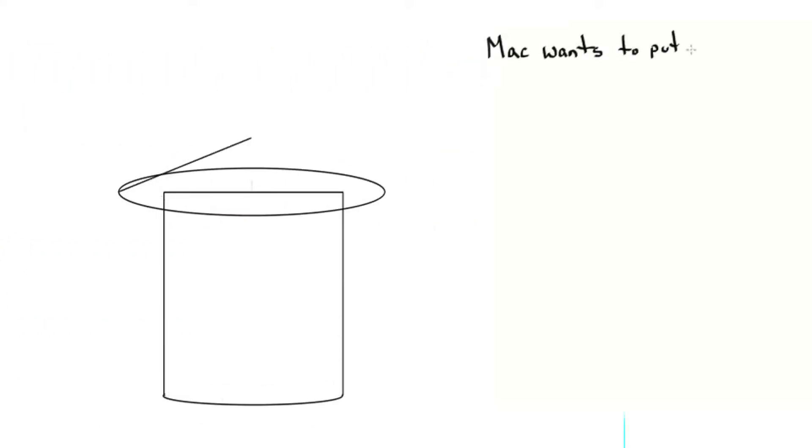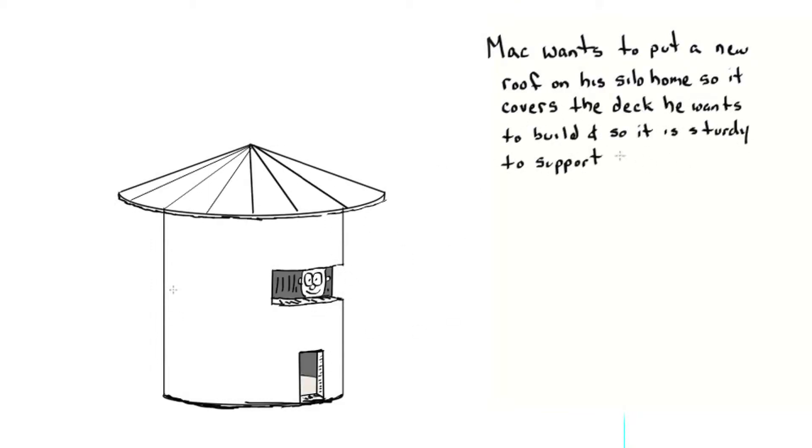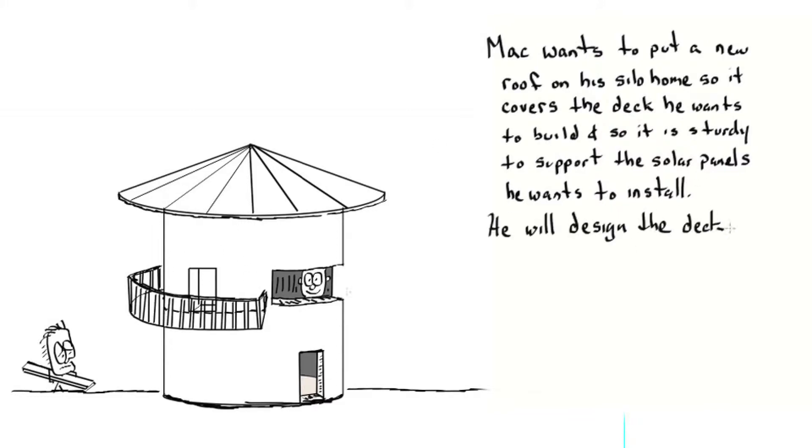Mac wants to put a new roof on his silo home so it covers the deck he wants to build and so it's sturdy to support the solar panels he wants to install. He will design the deck to extend 3 feet 6 inches from the wall.